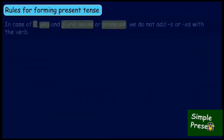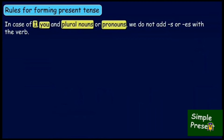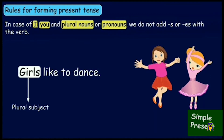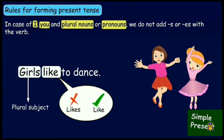And in case of I, you, and plural nouns or pronouns, we do not add S or ES to the verb. Here, the subject or noun in the sentence is 'girls,' which is a plural naming word. So we have used 'like' and not 'likes.'